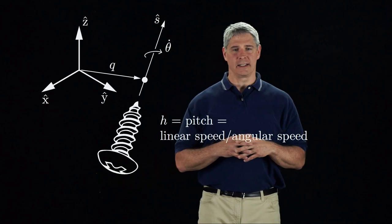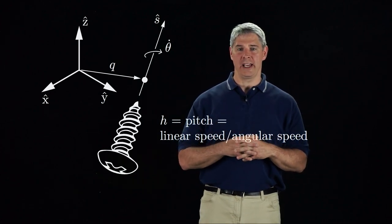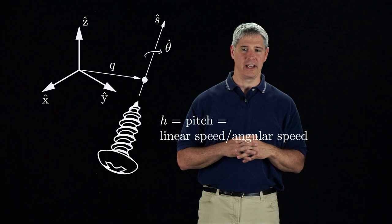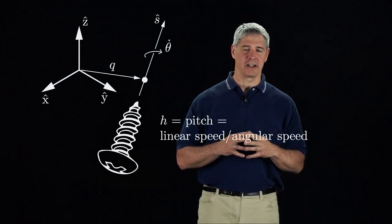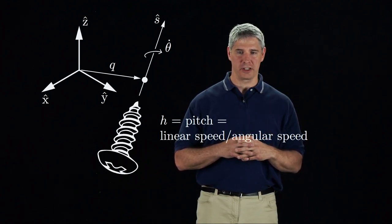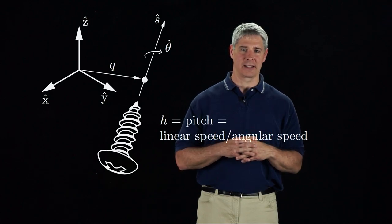The screw axis is defined by a point Q on the axis, a unit vector S in the direction of the axis, and the pitch H of the screw, which is the ratio of the linear speed along the axis to the angular speed about the axis.